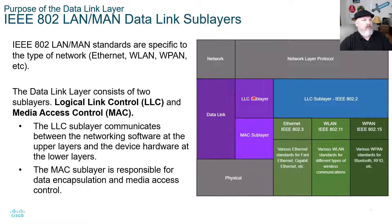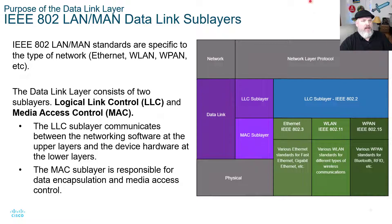We can see an example showing the packet structure: the network layer protocol, the data link layer with the LLC sub-layer, the 802 protocol governed by IEEE, the MAC sub-layer, and then IEEE 802.3, 802.11, or 802.15 depending on which standard we're looking at.